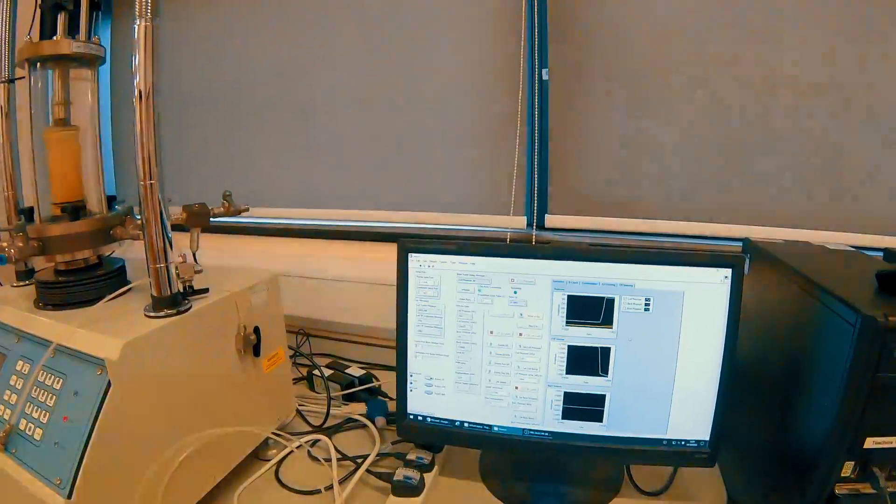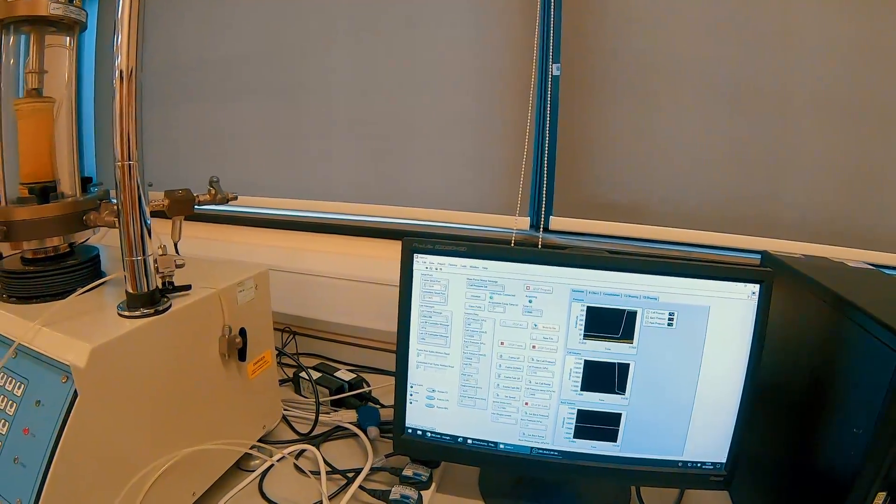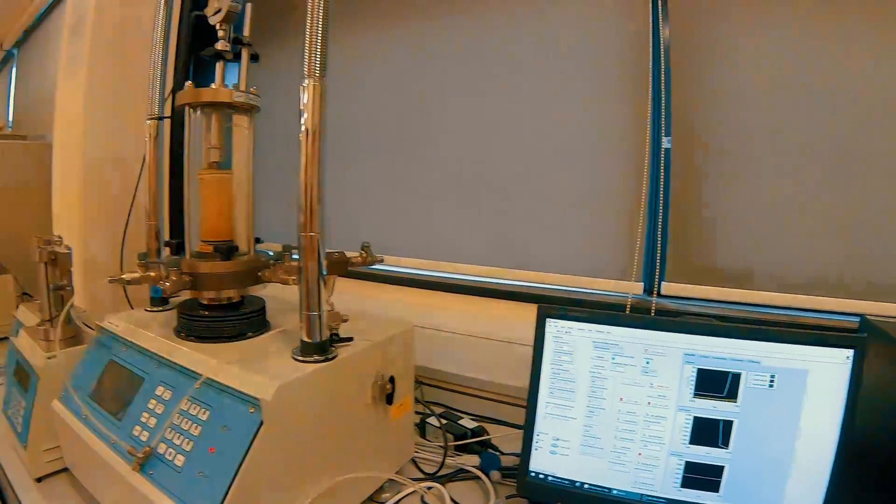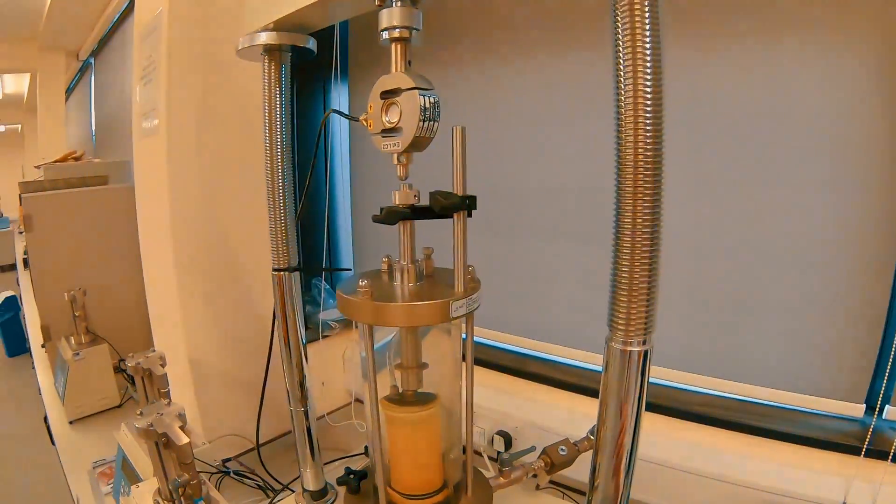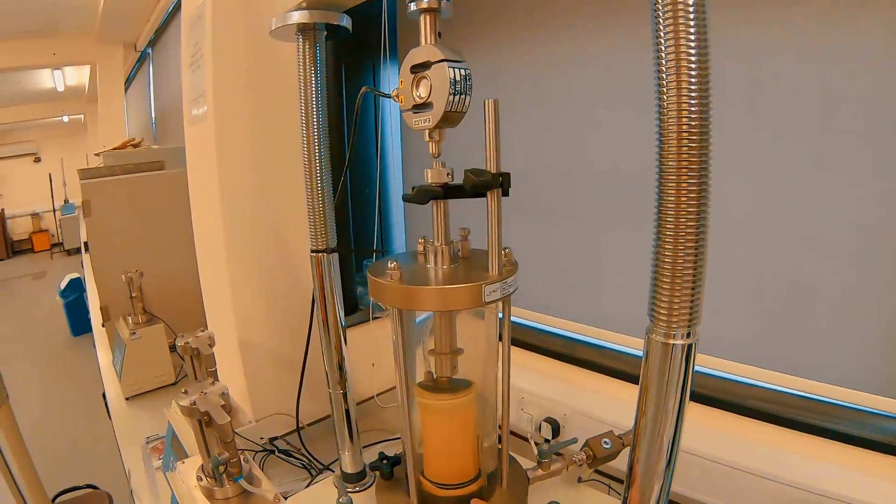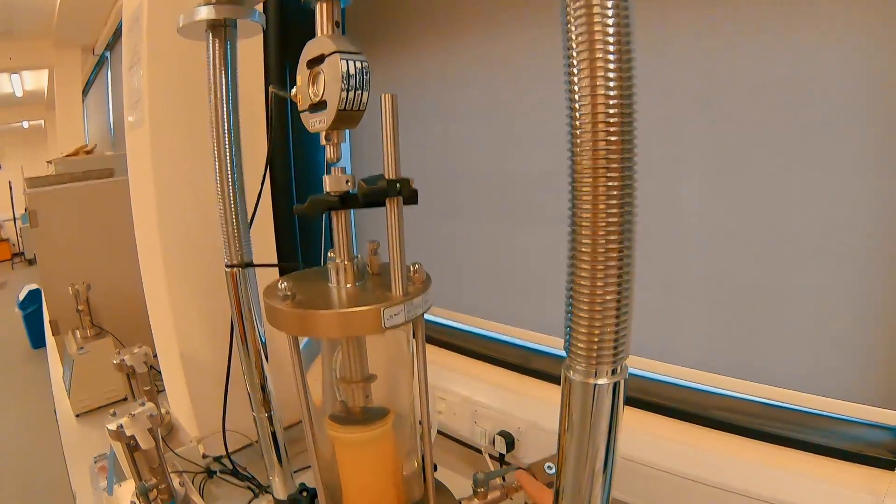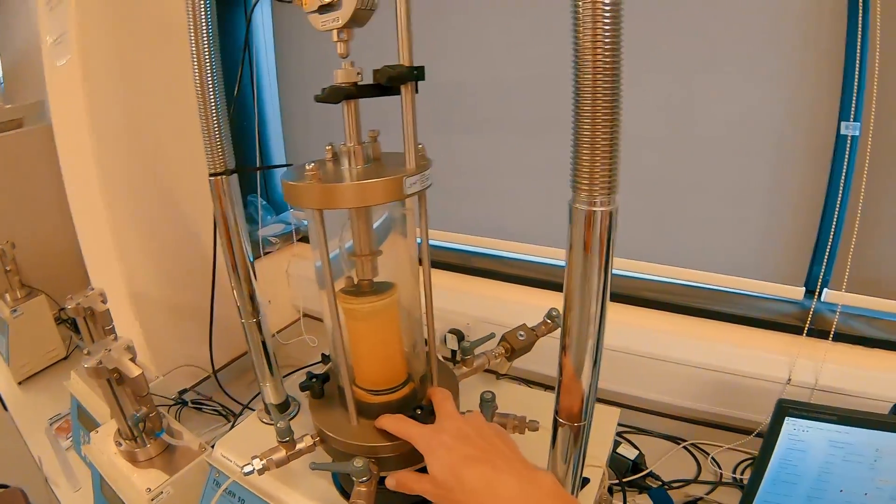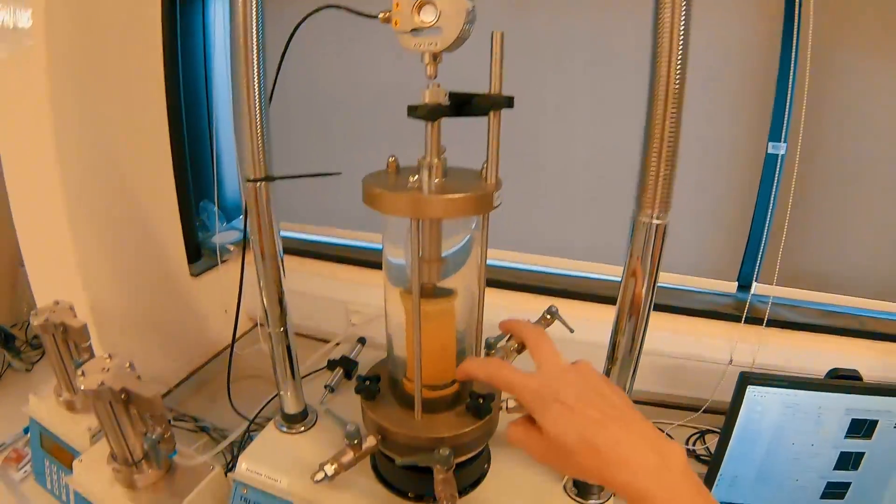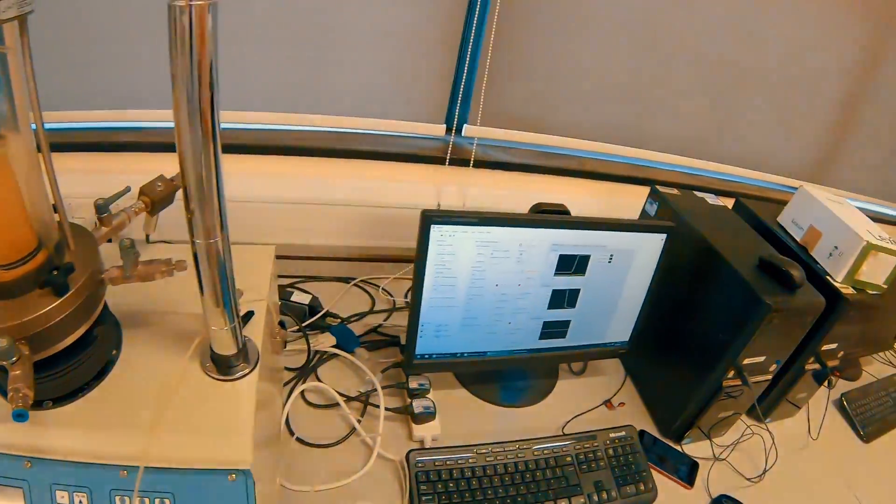That will change our pore water pressure and you can see that here because the bottom platen is closed off. There's only one way for the water within the sample to flow and that's out through the pore pressure transducer. You saw the two little holes on the bottom platen before we prepared our sample last time.